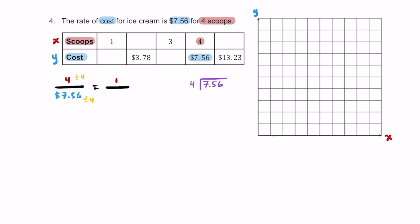Dividing $7.56 by 4: 4 goes into 7 one time, 1 times 4 is 4, 7 minus 4 is 3. Bring down the 5 — don't forget the decimal. 4 into 35 is 8 times; 8 times 4 is 32; 35 minus 32 is 3. Bring down the 6: 4 into 36 is 9 times; 9 times 4 is 36, remainder 0. So one scoop of ice cream costs $1.89.